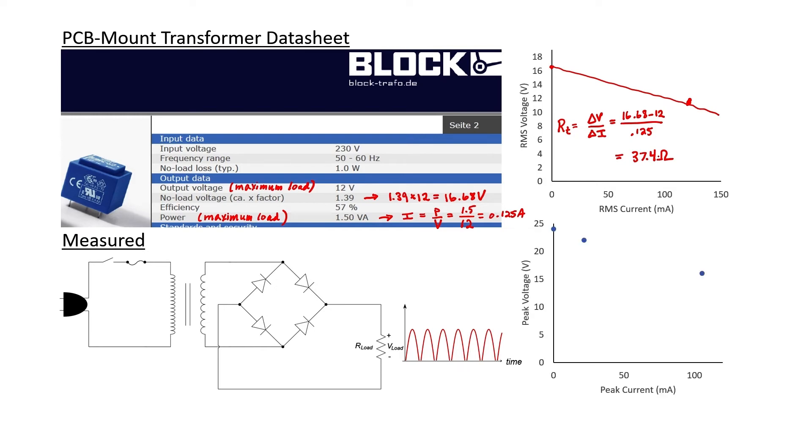Three different data points were measured in the course of that video. They're shown on the graph. If we plot a trend line, we can read the resistance from the slope of the line. This includes the effect of both the transformer and the diodes.